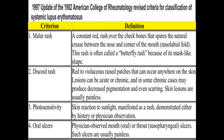Of the 11 ACR criteria, four involve the mucocutaneous area: malar rash, discoid rash, photosensitivity, and ulcers. Most students remember the titles without going through the descriptions. Malar rash is a constant red rash over the cheekbones that spares the natural creases — if it affects the natural creases, it is not a malar rash.